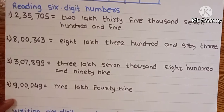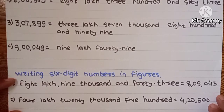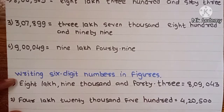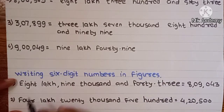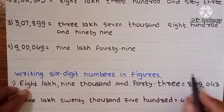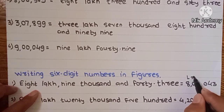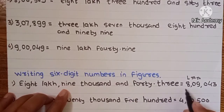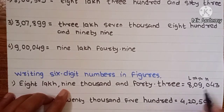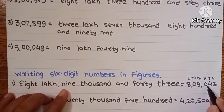Now we learn writing 6-digit numbers in figures. We are given the number in words and we have to write it in figures. Now: 8 lakh 9,043. At the lakh place we write 8. At the 10,000 place there is nothing, so we write 0. Then 9,000 — at the 1,000 place we write 9. And 43 — at the 100 place nothing, so write 0. And 43 at the tens and unit places. So 8,09,043 — at the 10,000 place is not given so write 0, at the 100 place also not given so write 0.